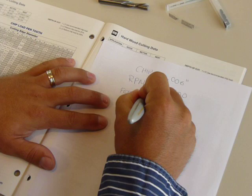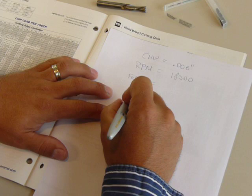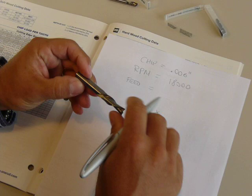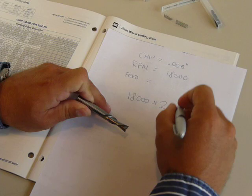Therefore, if we do the formula again like we did in the past, we take the 18,000 RPM, we then need to multiply by the number of cutting edges, which in this case, this tool has two cutting edges. Therefore, we multiply by two, and we multiply again by the recommended chip, which is 0.006.